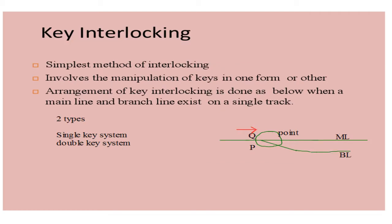Now let's go through the interlocking methods. Mainly there are two methods: key interlocking and mechanical interlocking. Key interlocking, compared to other systems, is the simplest method, but the possibility of human errors is somewhat more. It is also more labor intensive and is used in small stations.